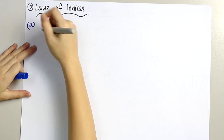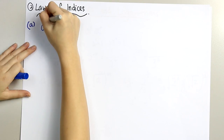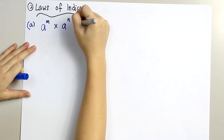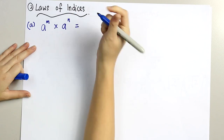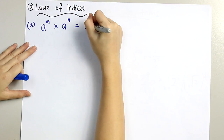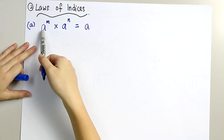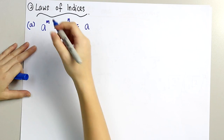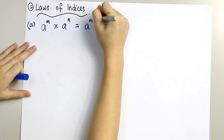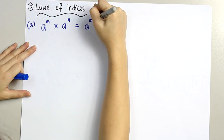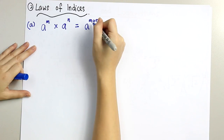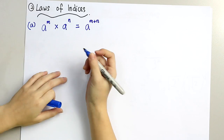A. When a to the power of m times a to the power of n — since both of them have the same base, the a will remain. We take both of the powers and we add them up. For multiplication, we add the powers.